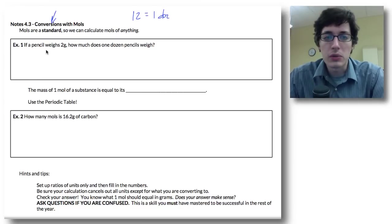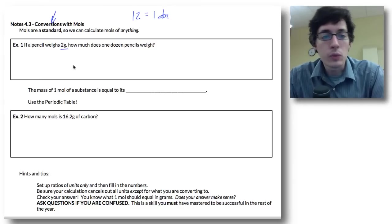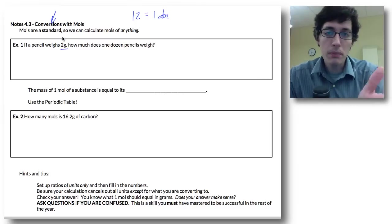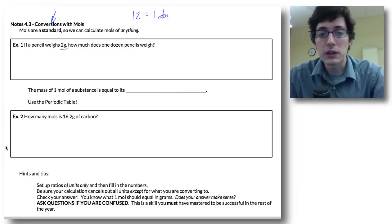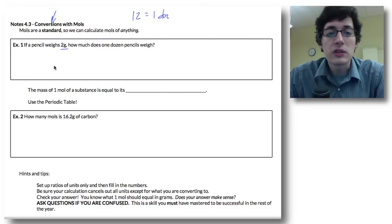So let's take a look at this first example. If a pencil weighs 2 grams, how much does one dozen pencils weigh? So I want to change from a per pencil mass to a dozen pencils. So we can put this into an equation. So we've got 2 grams per pencil. This is for one pencil.